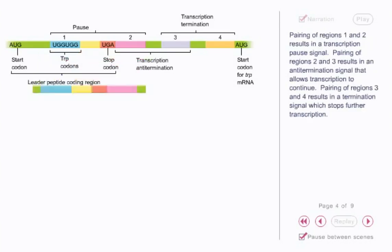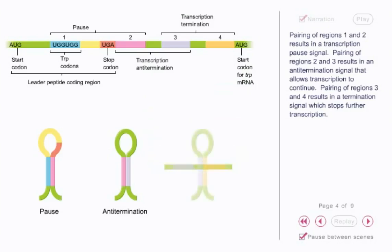Pairing of regions 1 and 2 results in a transcription pause signal. Pairing of regions 2 and 3 results in an anti-termination signal that allows transcription to continue. Pairing of regions 3 and 4 results in a termination signal which stops further transcription.